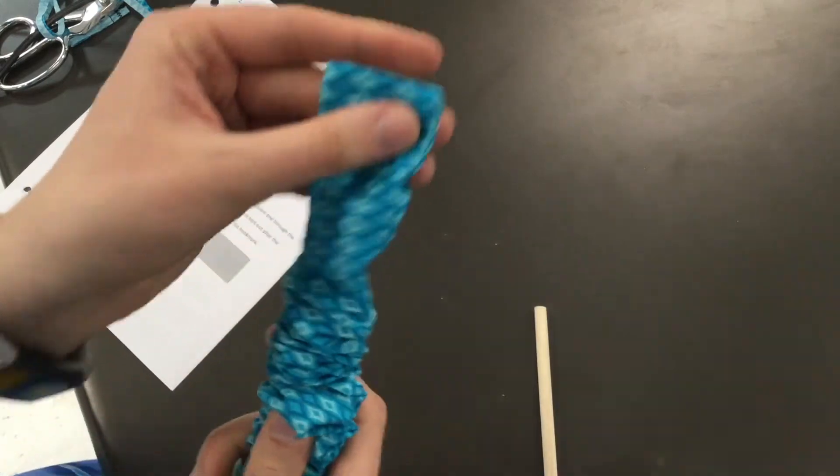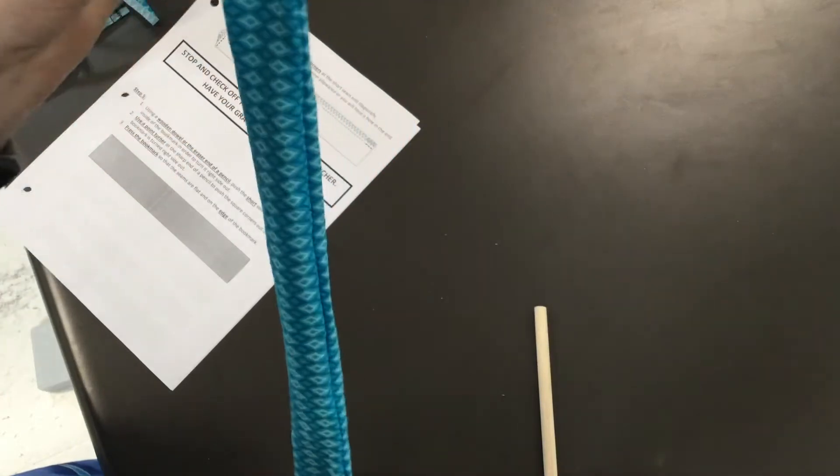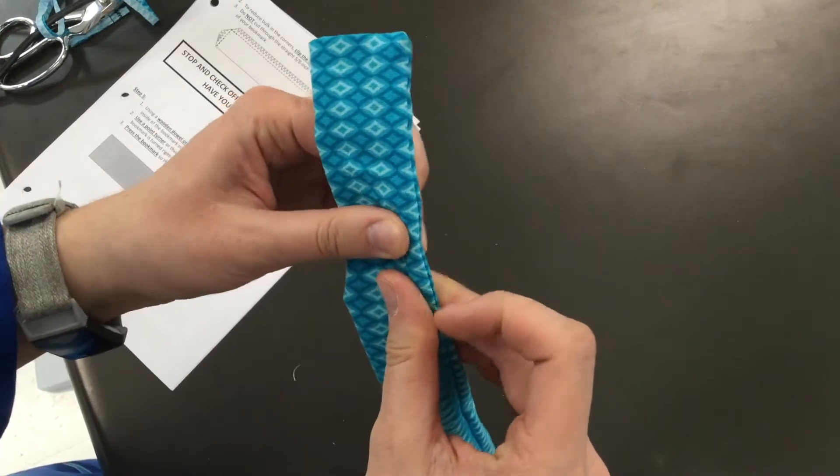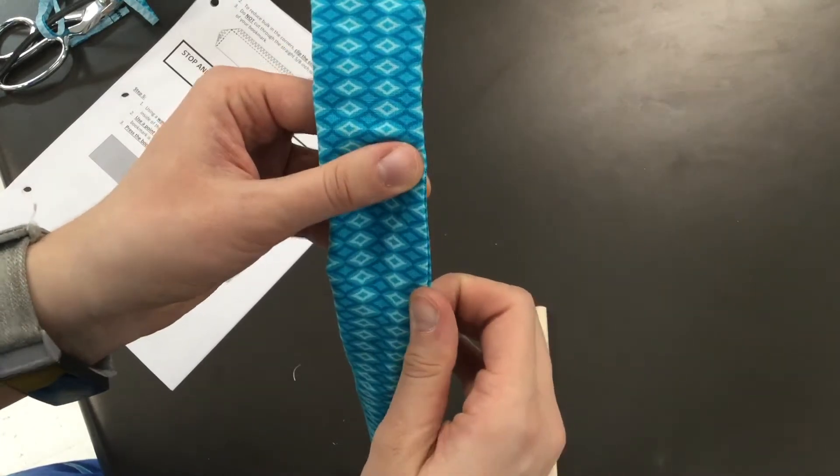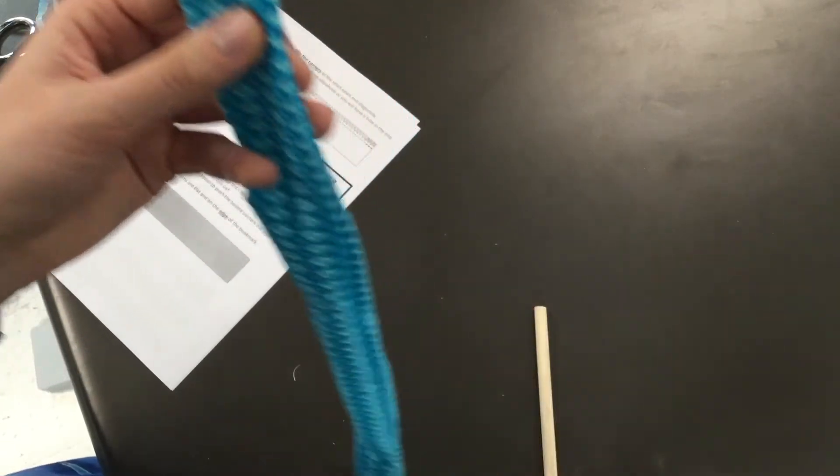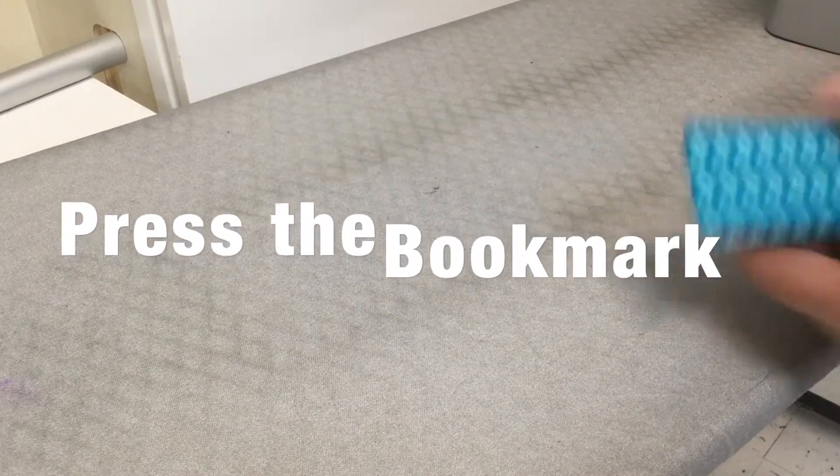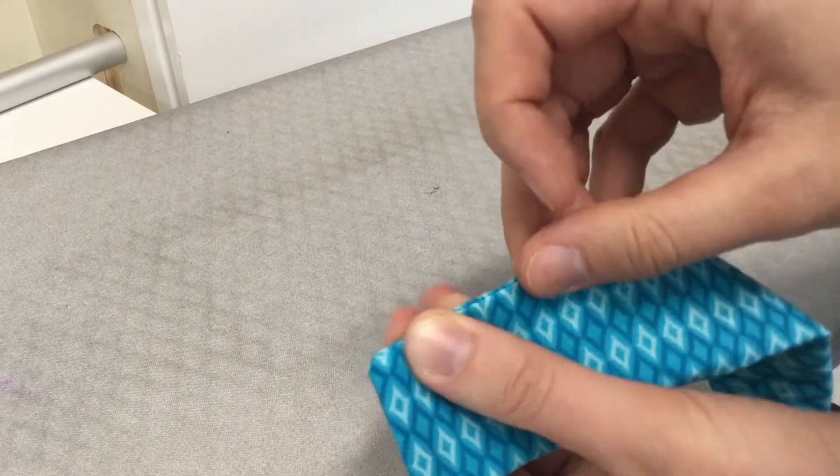Now we need to iron it so that this seam is as close to the edge as possible and it's nice, flat, and crisp. Kind of rub it back and forth to get that seam right on the edge. If it's right on the edge, take your iron.